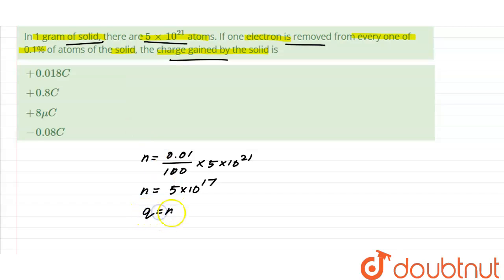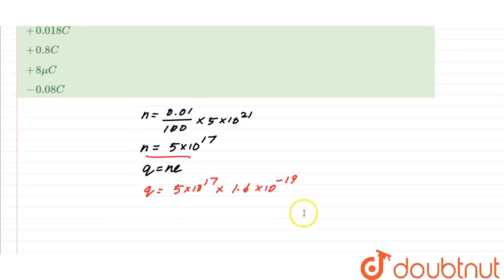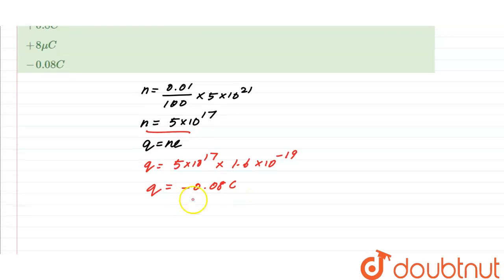So total charge removed is given as q equal to n e. So we know the value of n, so q equal to 5 into 10 power 17 into 1.6 into 10 power minus 19.